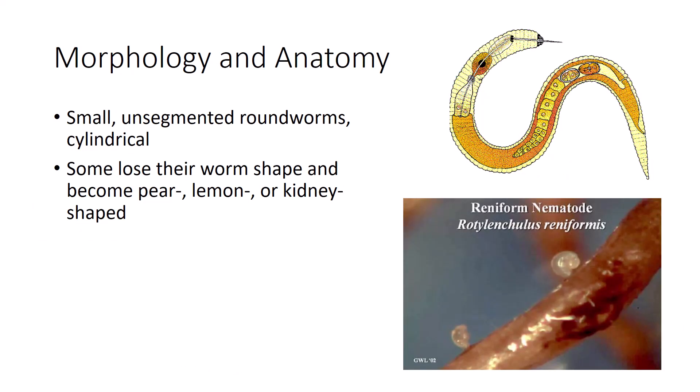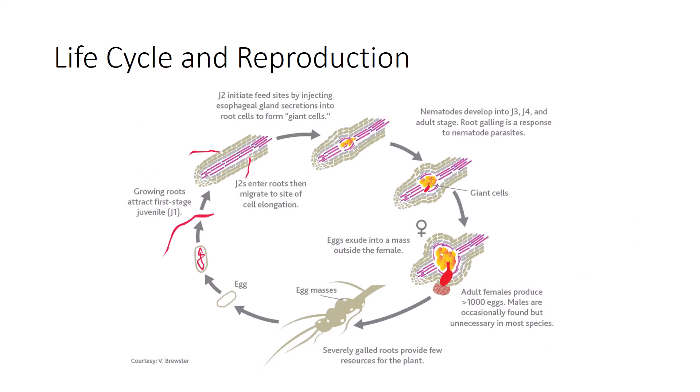Plant nematodes are tiny, unsegmented roundworms that are cylindrical, tapering toward the head and tail. Females of a few species lose their worm shape as they mature, becoming pear, lemon, or kidney-shaped. Plant parasitic nematodes possess all of the major organ systems of higher animals except respiratory and circulatory systems. The body is covered by a transparent cuticle which bears surface marks helpful for identifying nematode species. The life cycle has six stages: egg, four juvenile stages, and adult. Male and female nematodes occur in most species, but reproduction without males is common, and some species are hermaphroditic, with females producing both sperm and eggs. Most species produce between 50 and 500 eggs per female, but some can produce more than a thousand eggs.